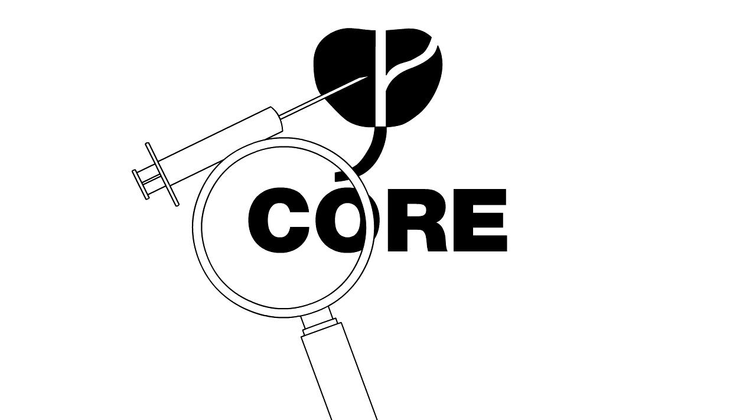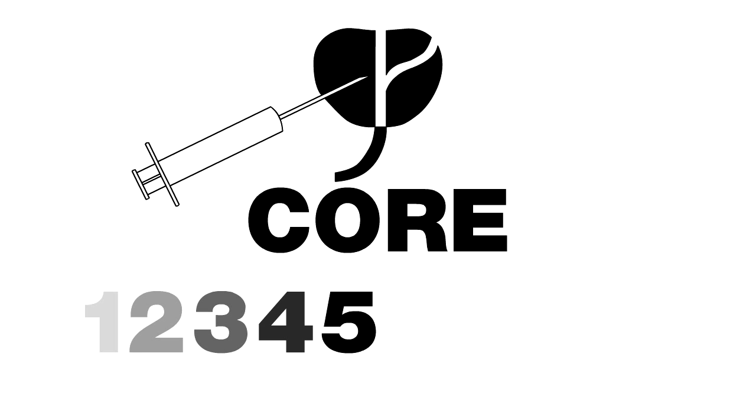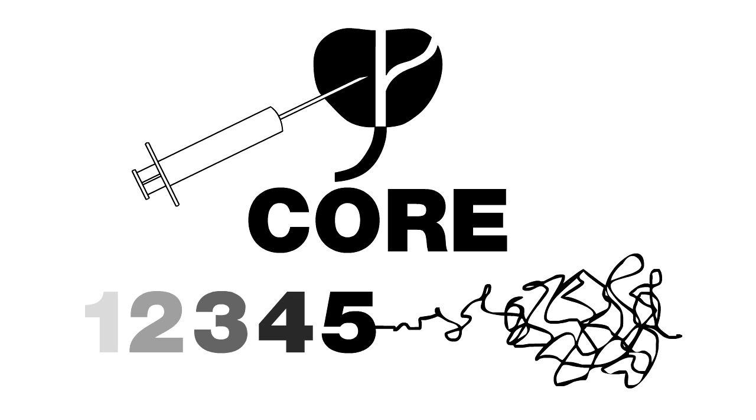The biopsy sample, called a core, is removed from the prostate using a hollow needle. The pathologist examines the core and assigns scores from 1 to 5 based on how disorganized, irregular, and just how messy things look.